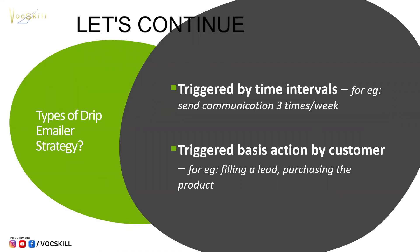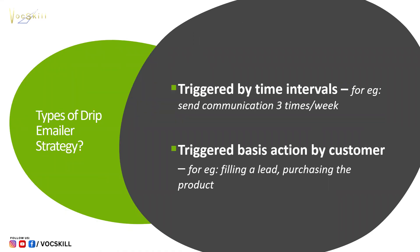There are two types of drip campaigns. The first and simplest one is triggered by time — you set up your database and set up three emails, specifying exact days and times: day 11 on Monday, day 12 on Tuesday, day 13 on Friday. That's all you are doing in the simplest one. The second type is a little more interesting.